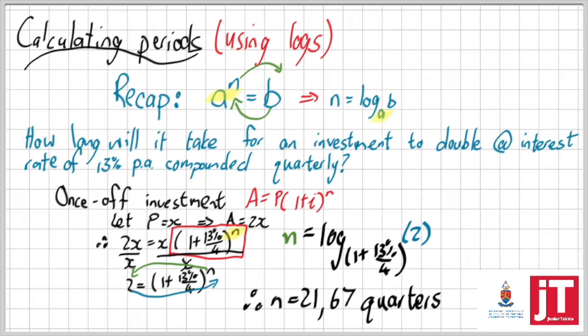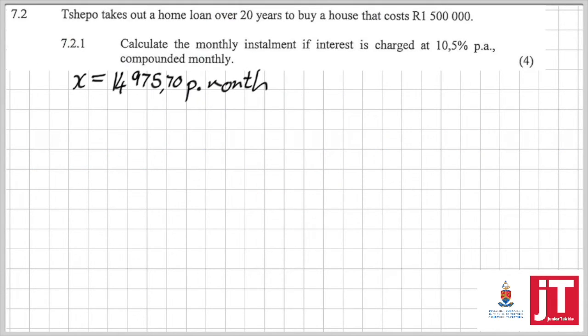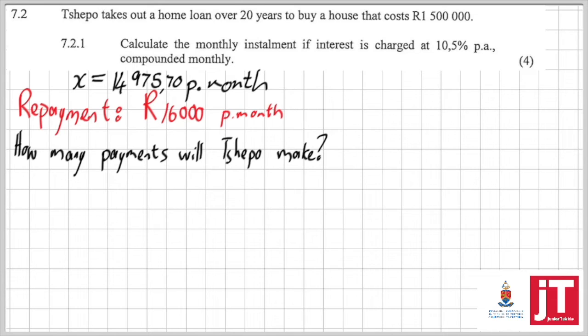Now this is more of an annuity type of example. Remember this sum? We did it. We've been working on this sum for a while now. But what we are going to look at for this question today is what if I decide to repay, or if Tsepo repays 16,000 rand per month. How many payments will she actually make?